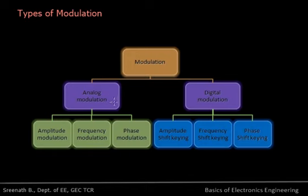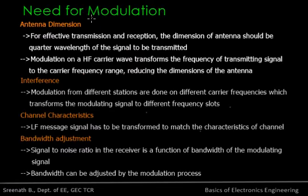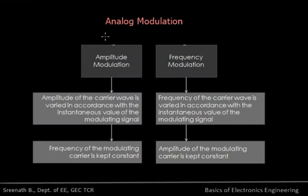Different types of modulation can be divided into analog modulation and digital modulation. In this lecture we are concerned with amplitude modulation and frequency modulation. In amplitude modulation, the amplitude of the carrier wave is varied in accordance with the instantaneous value of the modulating signal, while the frequency remains constant. In frequency modulation, the frequency of the carrier wave is varied in accordance with the instantaneous value of the modulating signal, while the amplitude remains constant.